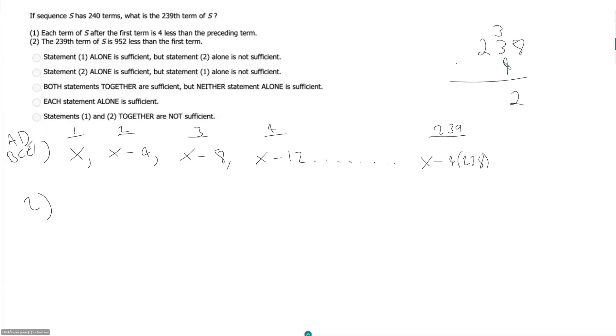2, put that 3 up here. 4 times 3 is 12, plus 3 is 15, 952.